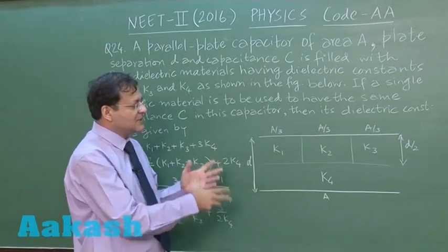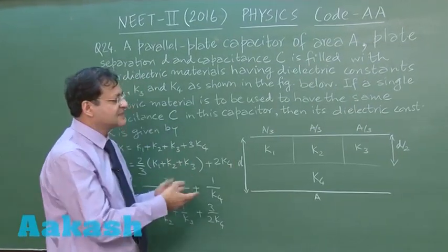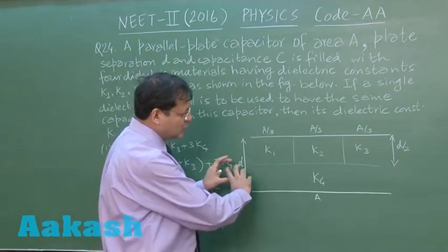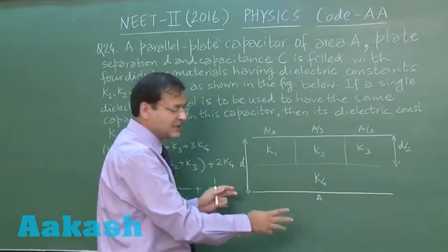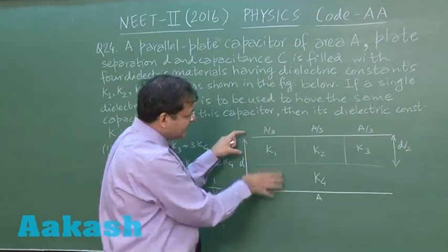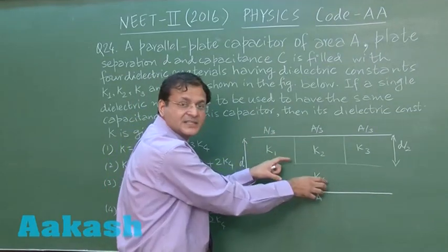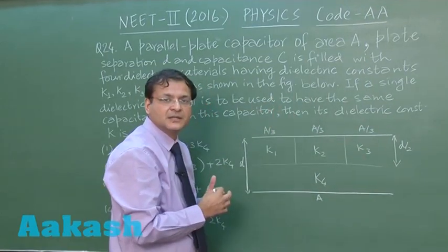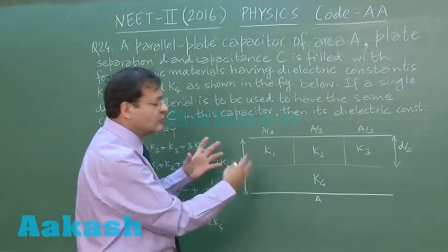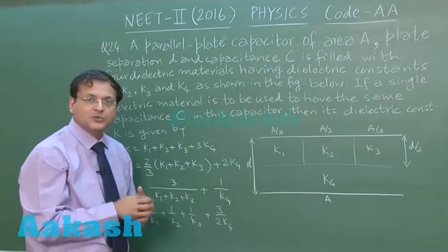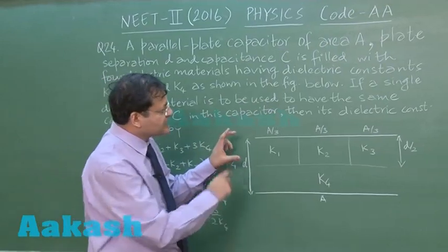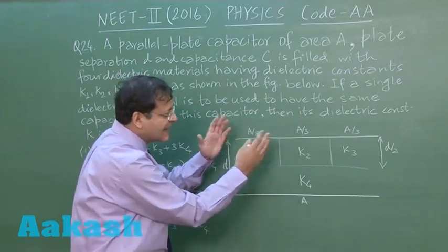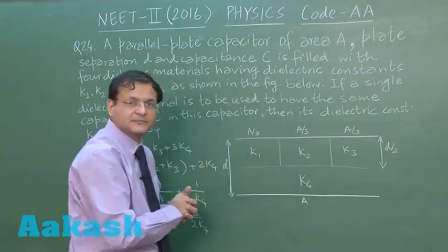Now see, if you assume that it was an air capacitor and its capacitance is say C dash, then what you have to understand here is that this lower dielectric material is to be divided into 3 parts, and then these two together in series, then these two together in series, and these two together in series, and finally you have to connect all three of them in parallel. So if you go by that approach, you will not be getting any option which is given here. So what we are thinking here is that the upper three dielectric materials they have to be treated in parallel, and together they have to be treated in series with the lower material, understand.